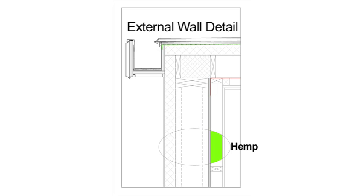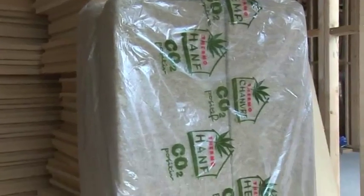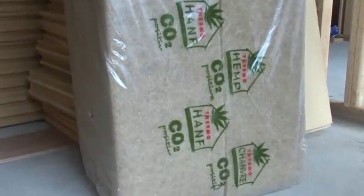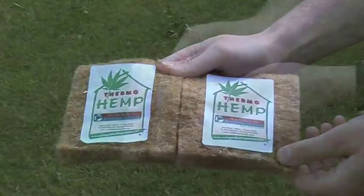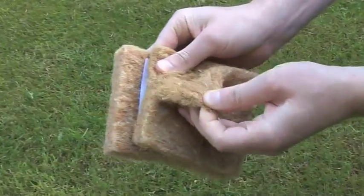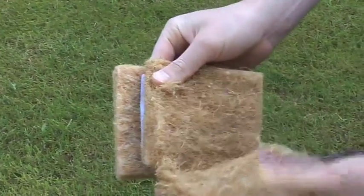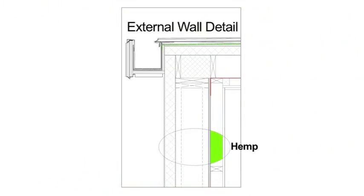Hemp insulation is manufactured from hemp — the world's oldest cultivated plant. It has a very high thermal value, is very lightweight, easy to install, and primarily installed as a mat. It's also non-allergenic and improves indoor air quality as it doesn't contain any harmful VOCs.